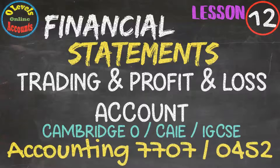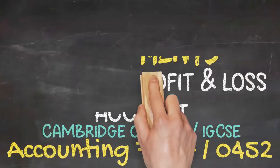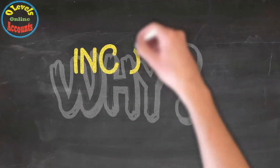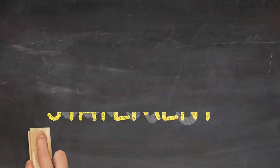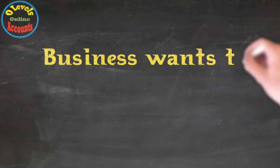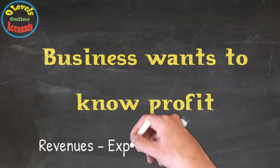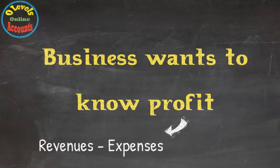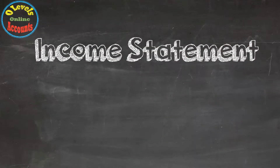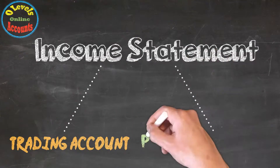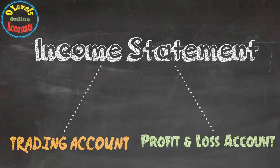Let's begin the lesson material. Why Income Statement? A business wants to know what profit is — simply revenue minus expenses. This is the common phenomenon we discussed earlier. Now here we will check in much more detail. There are two components of the income statement: Trading Account and Profit and Loss Account.